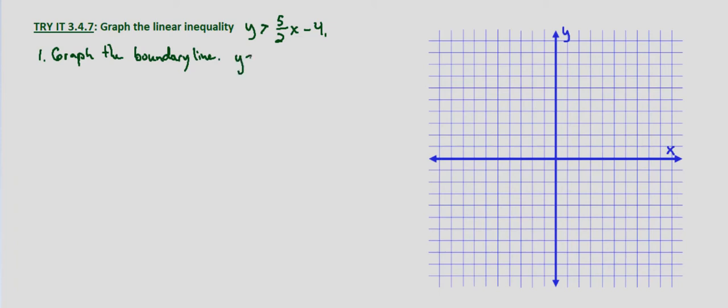So we have y equals, just remove the inequality, 5 halves x minus 4. And since it's non-inclusive, the inequality we're given, it's going to be a dashed line.